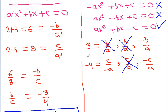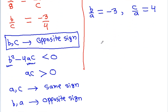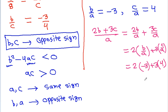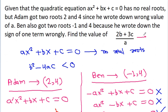From the correct equation, -b/a=3, so b/a=-3. And -c/a=-4, so c/a=4. We have to find the value of (2b+3c)/a, which equals 2(b/a)+3(c/a) = 2(-3)+3(4) = -6+12 = 6. So the answer is 6.